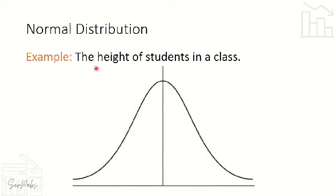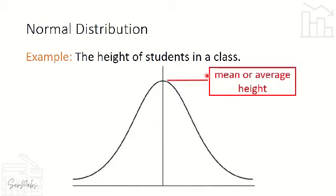For example, consider the height of students in a class. Majority of the students have an average height — hindi sila matangkad na matangkad, hindi maliit na maliit — so karamihan are measured sa gitna, represented by the mean. We can also represent it as the mode or median, but commonly the mean is used. That is the tendency of the score to cluster at the center.